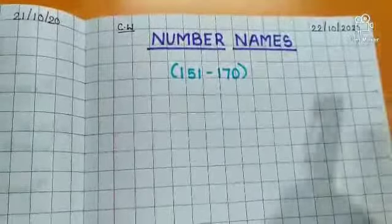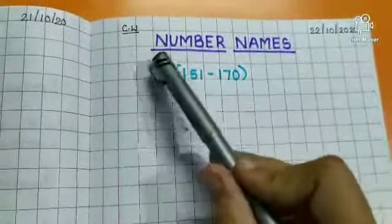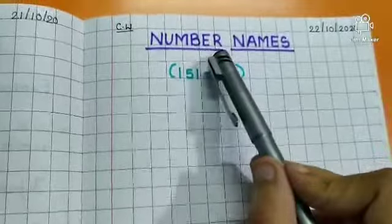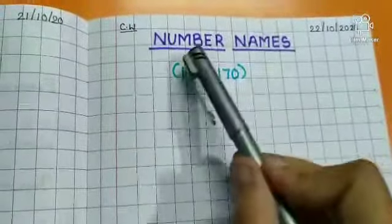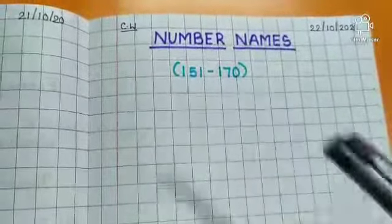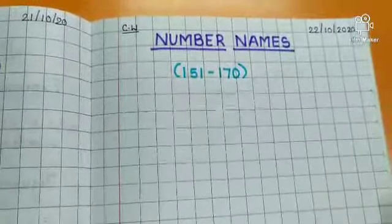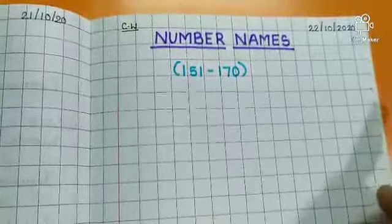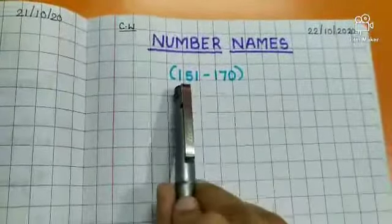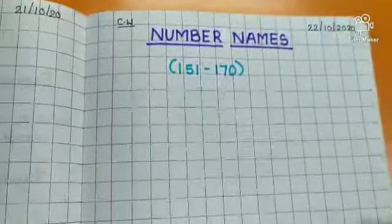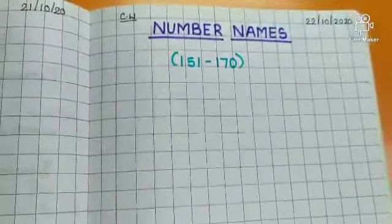Today we will do number names. So write down the heading: number names. N-U-M-B-E-R, number. N-A-M-E-S, names. Number names. So we have done number names till 150. Today we will do number names from 151 to 170. Write down the heading.